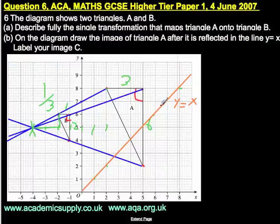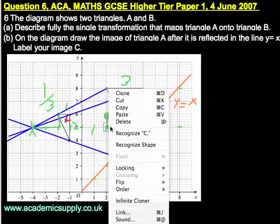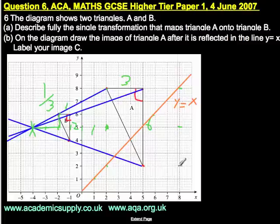So triangle A will be reflected. Going from one point, that's one and a half units to the line, so we keep going the same distance to get the reflected point. For the next point, we go one and a half to the line and continue to get the reflected position. For the third point, we go three units to the line, then three units the other side, arriving at that reflected point.